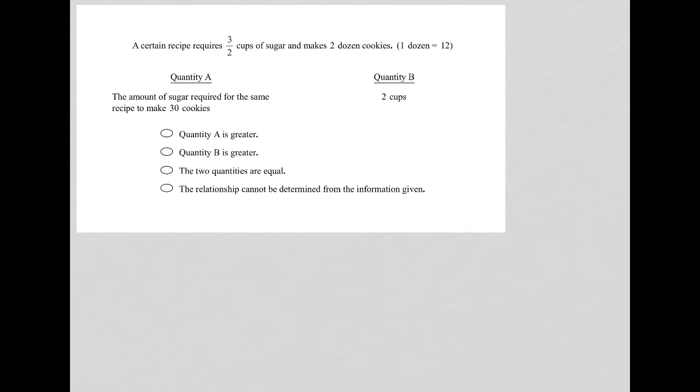So three halves cups. I'm going to create a sugar column where we have three halves cups required, and a cookies column where we get two dozen from that.